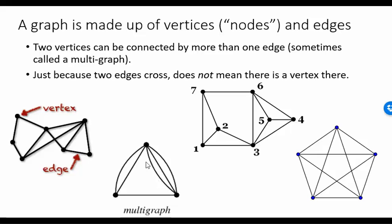For example, in this graph right here, these two vertices are connected by two edges, and these two vertices happen to be connected with three edges. Just because two edges cross does not mean there's a vertex there. In this graph right here, this edge crosses this edge, but there is no vertex there.